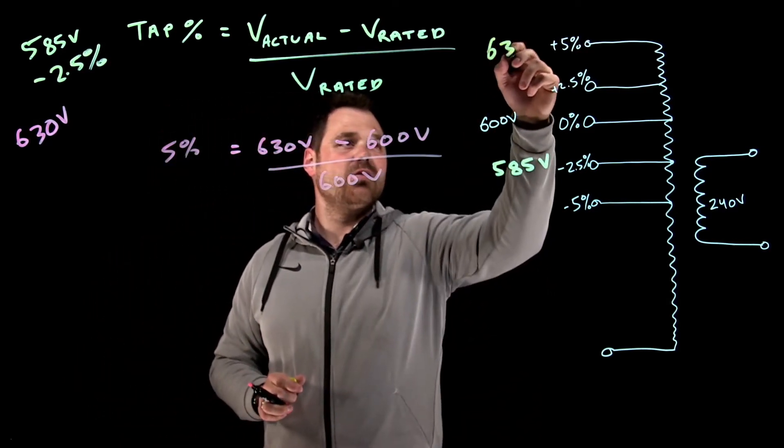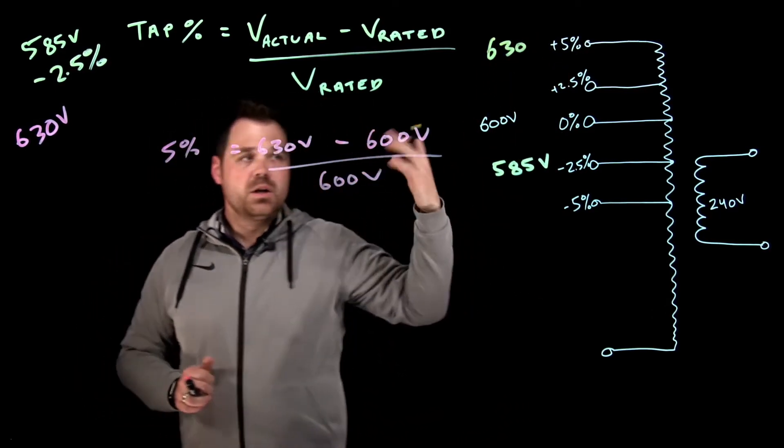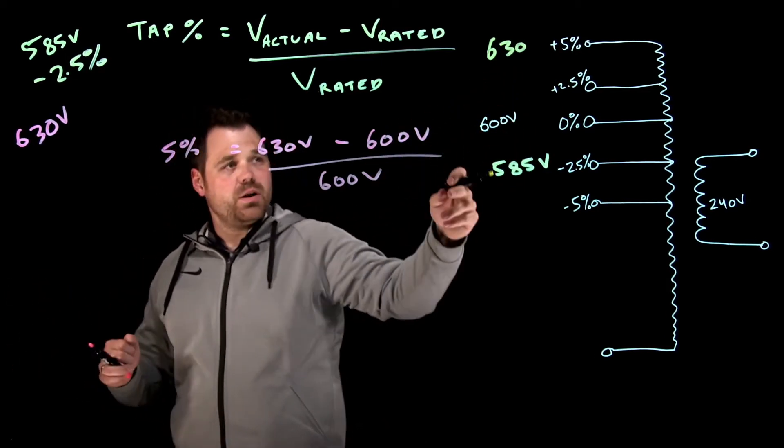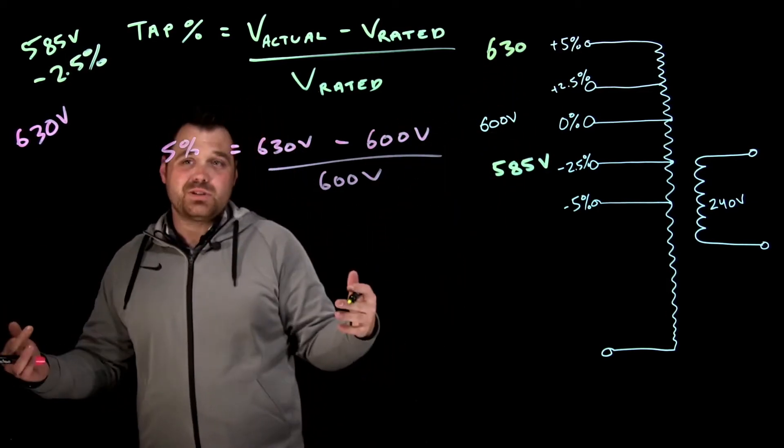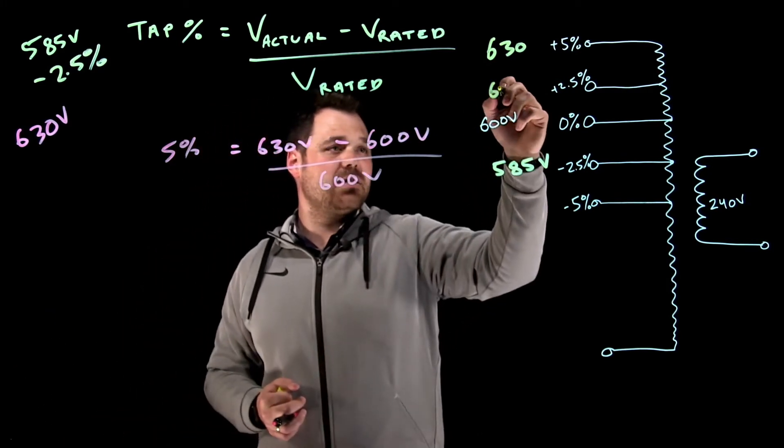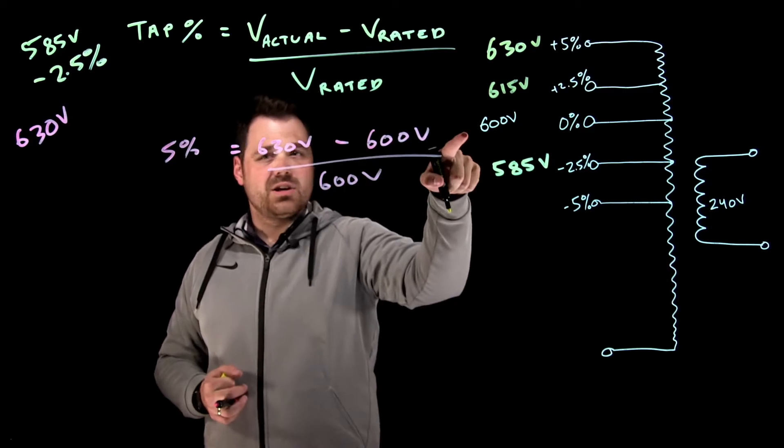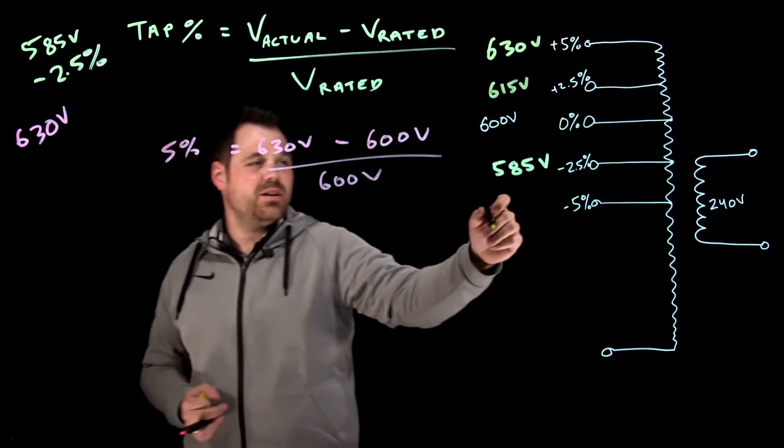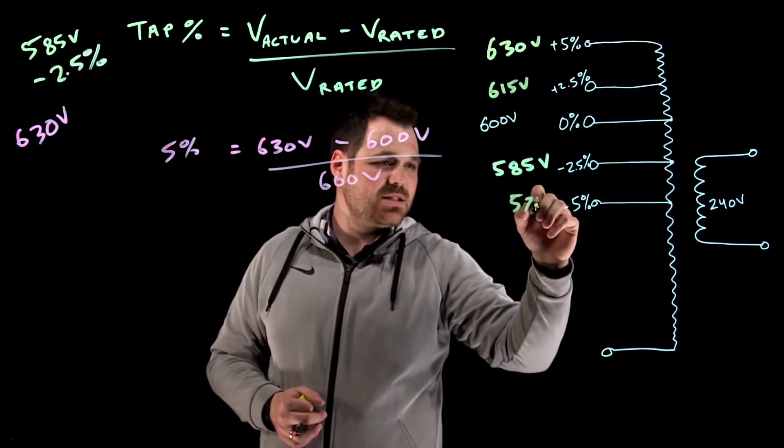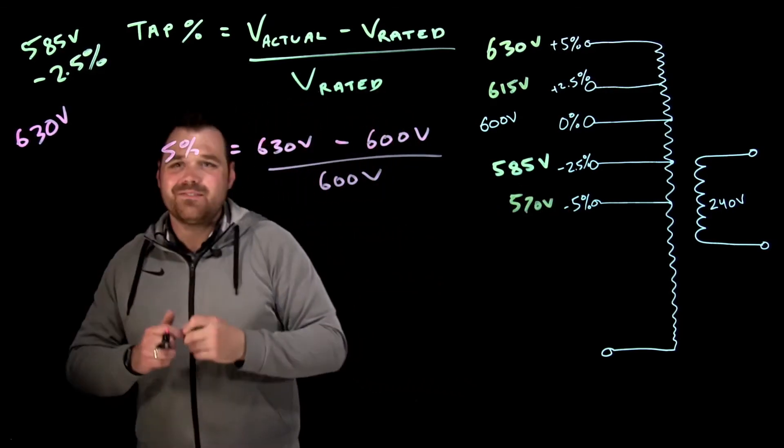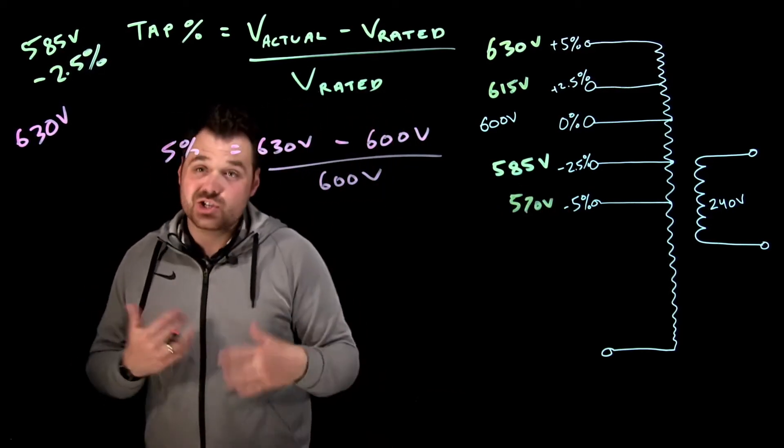So that's 630 volts up there. And then we could fill in the other two here just by going 600, or plus two and a half percent would give me 615 volts. And then 600 minus 5%, just type that into our calculator, gives us 570 volts. So we can kind of fill out the rest of that chart there.